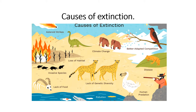A species which cannot reproduce enough offspring will disappear forever from the face of the earth — it will become extinct. This has happened many times in the past due to different causes.